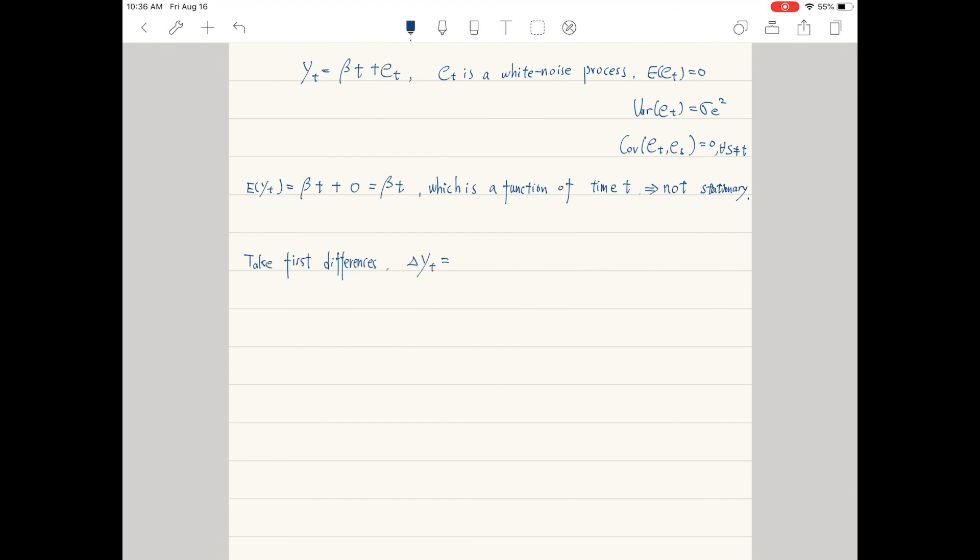However, when we first difference this process, delta y is covariance stationary. Because the mean, variance, and covariance of the series delta y are independent of time.